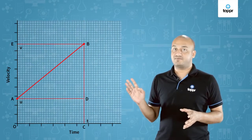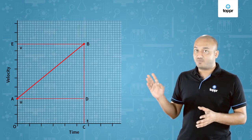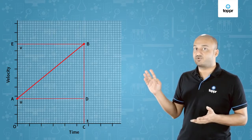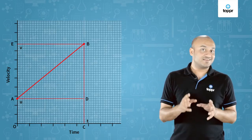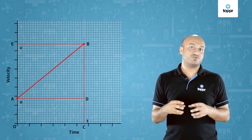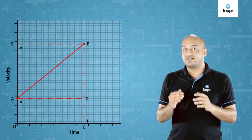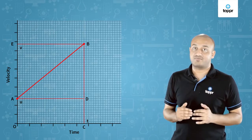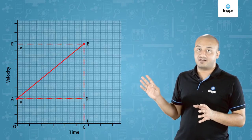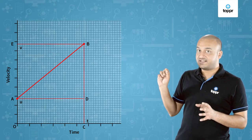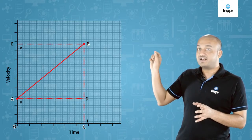Let's start by looking at this graph. You can see that this is a velocity-time graph of a body which is in uniformly accelerated motion, so it's a straight line AB. Now we all know that the distance covered by a body which is uniformly accelerated can be found by the area covered in the velocity-time graph. So we are trying to find the area enclosed between points O, A, B, and C.